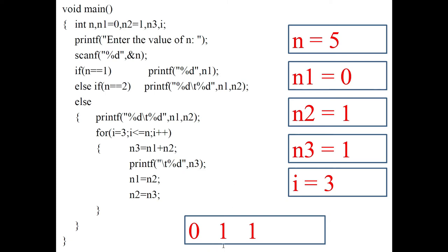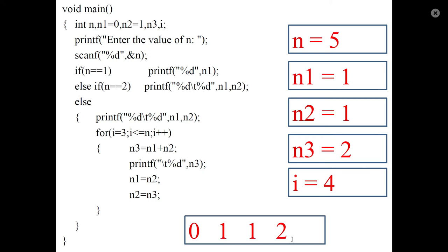Print N3, so 1 is displayed. Then update N1 and N2: shift N2 into N1 and N3 into N2. Then increment i by 1, now it is 4. The condition is still true, so calculate N3 again as the sum of N1 and N2, which equals 2. Display N3, so 2 is displayed.